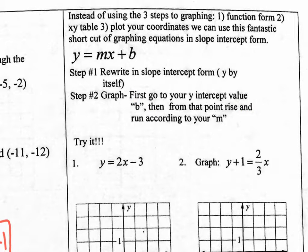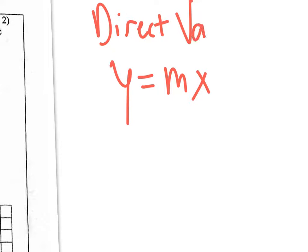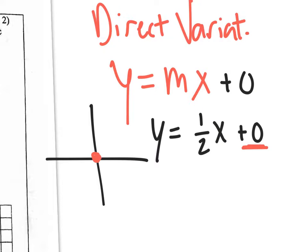You first go to your y-intercept value, which is your B, and then from that point you rise and run according to your m. Yesterday's lesson was direct variation: y equals mx. We would put a plus zero to help remember it's crossing the origin. For example, y equals one-half x — a direct variation equation — we'd add the plus zero, start at the origin, go up 1 over 2, and draw the line. Today is the same except instead of plus zero you have a different B value.